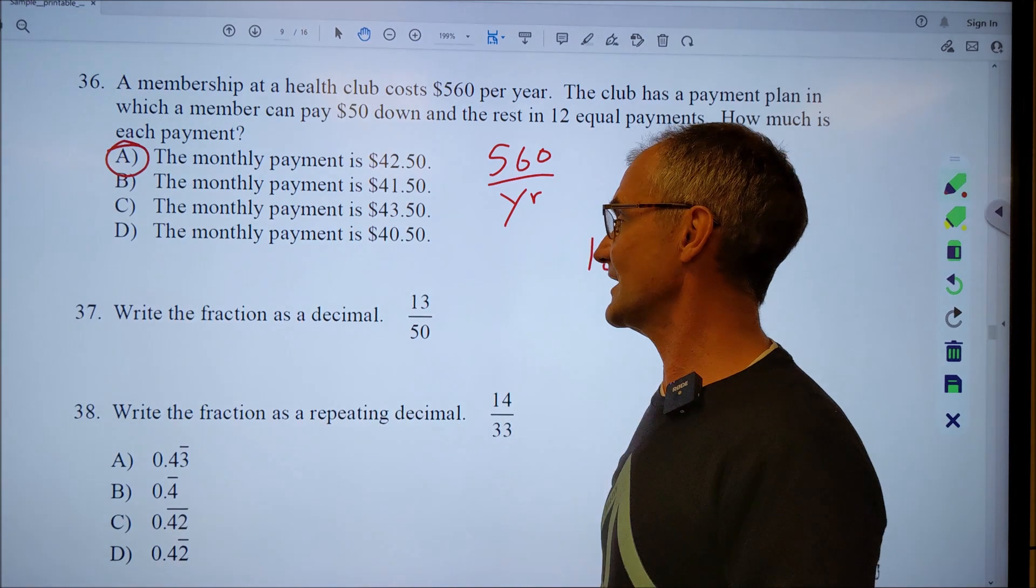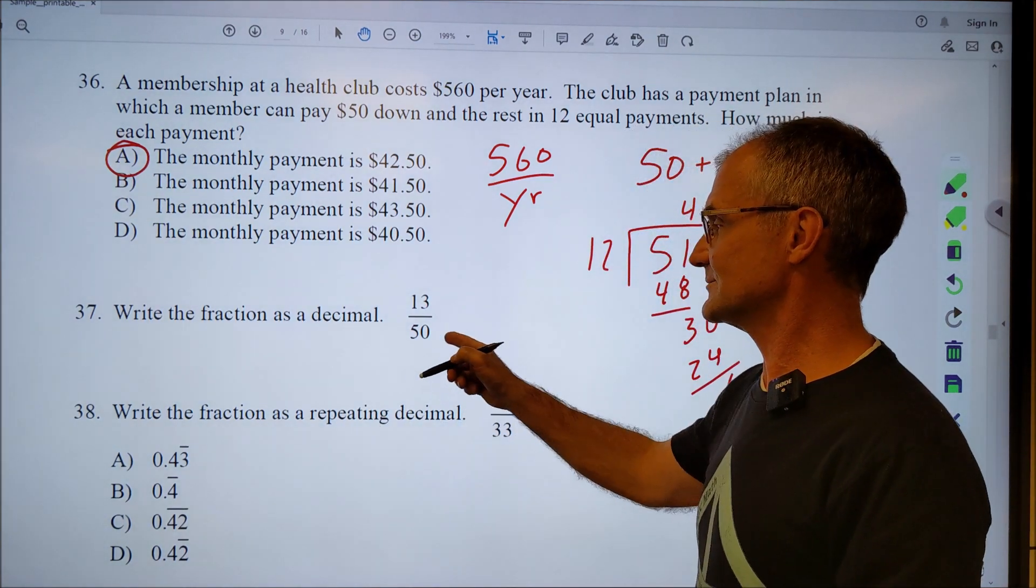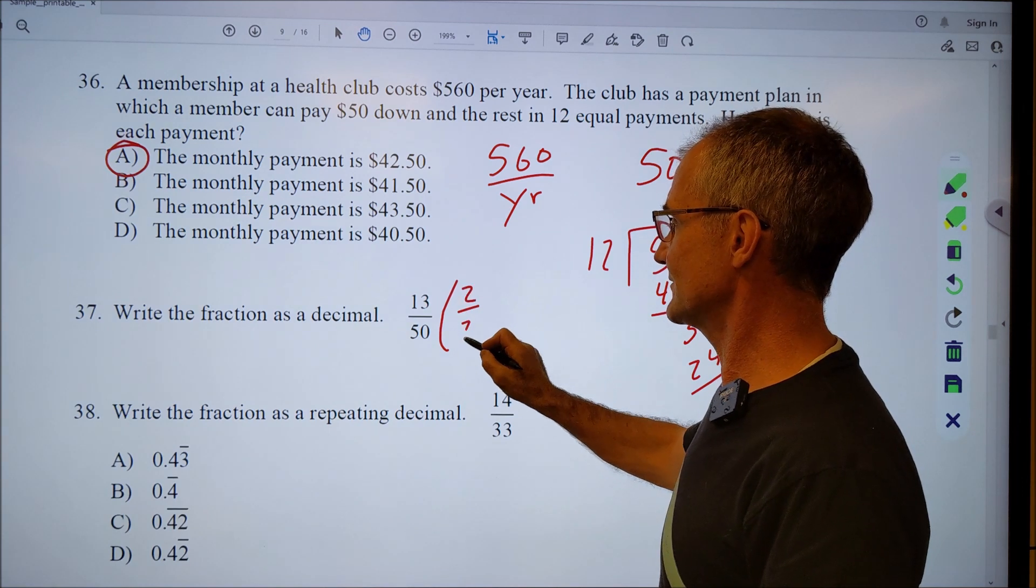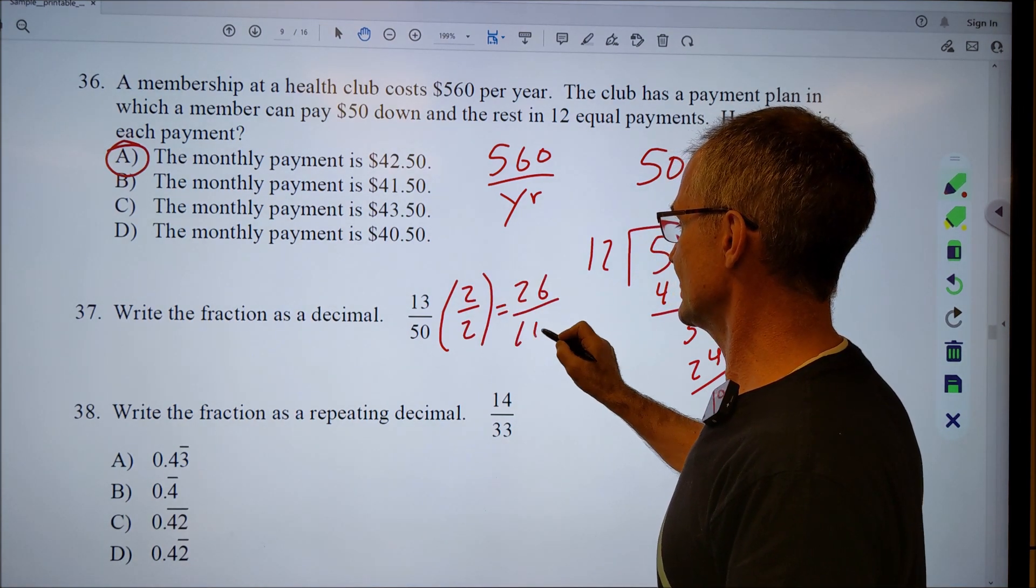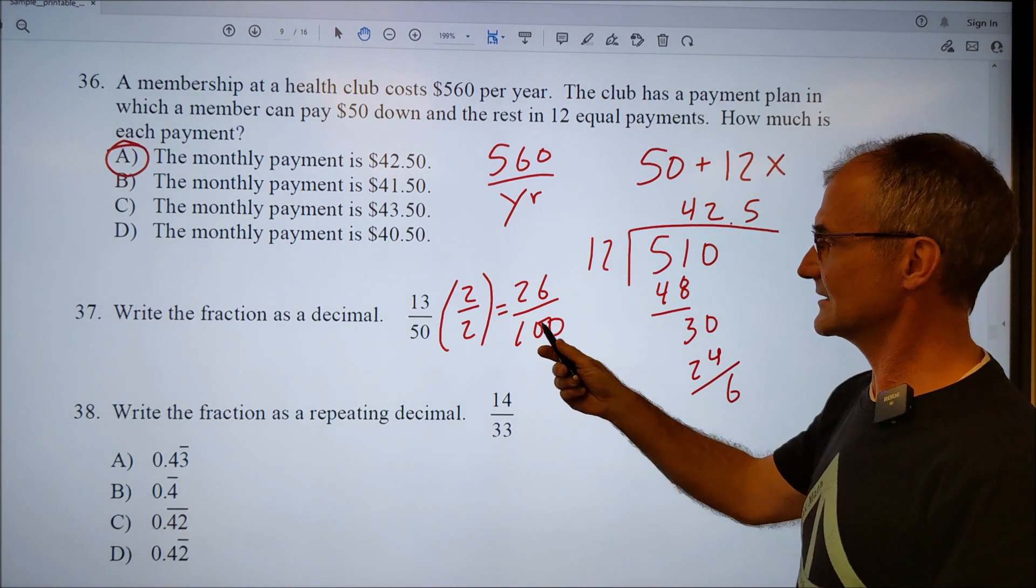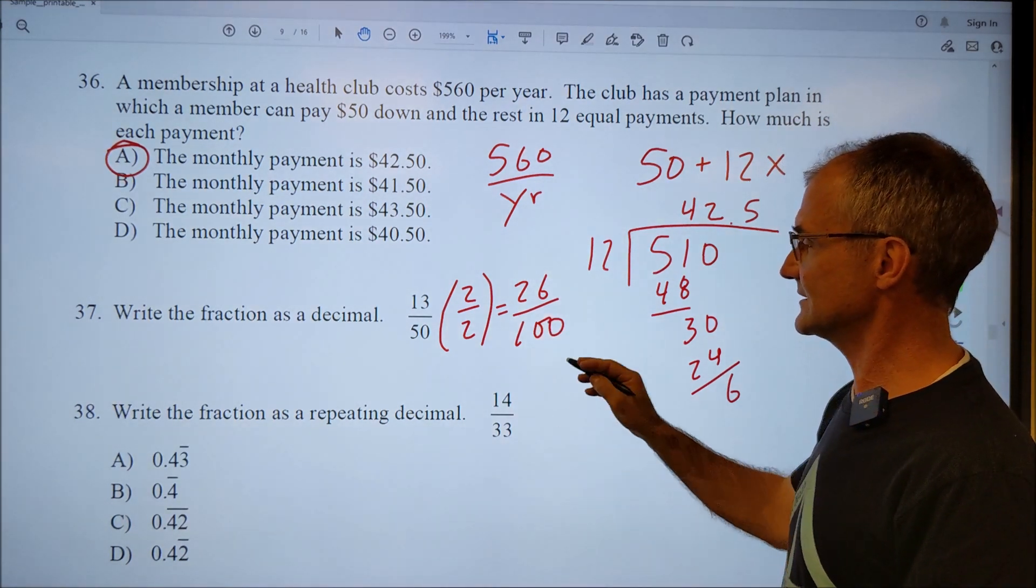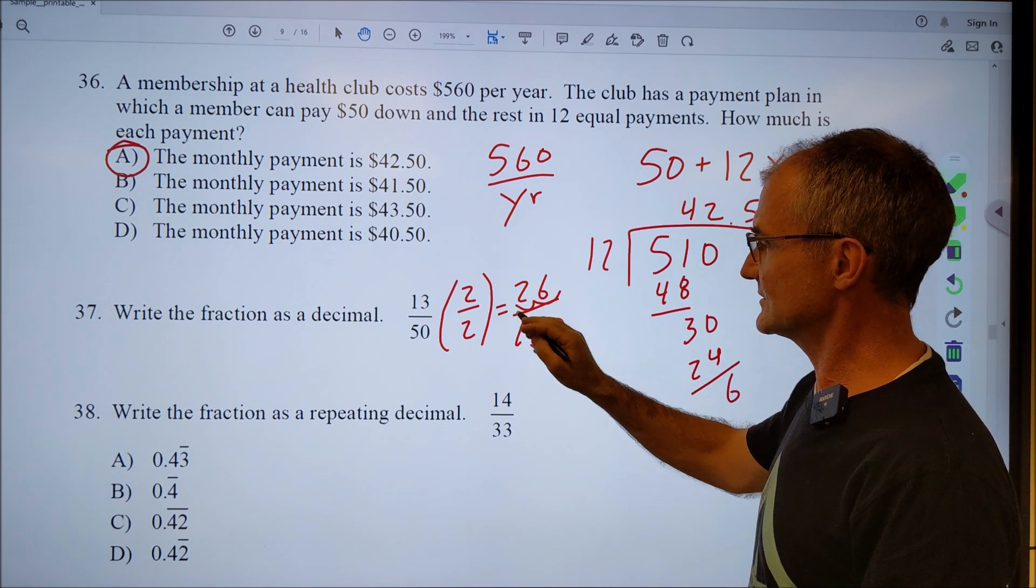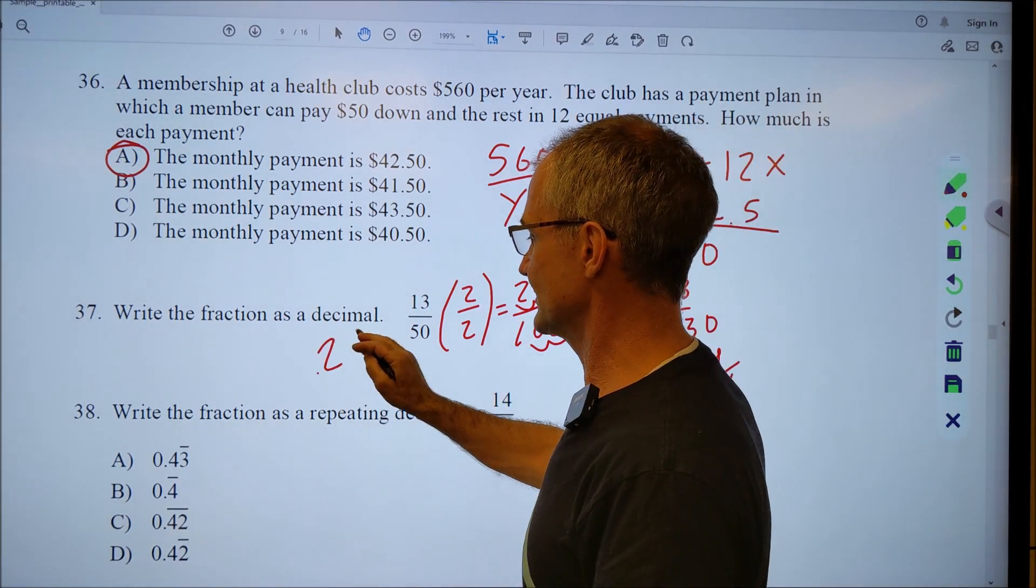Number thirty-seven, write the fraction as a decimal. Well, a decimal is going to have a divider of a hundred, so I'm going to multiply that by two over two. That'll give me twenty-six over a hundred. And then I could convert that to a decimal pretty easily. By making it over one, I go over one, two. So I go over one, two. And my answer would be .26.